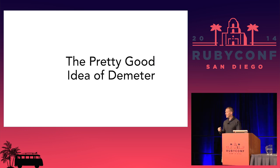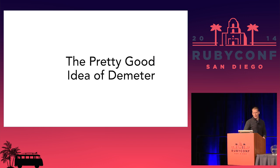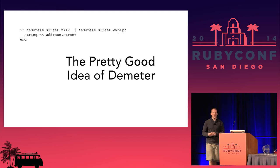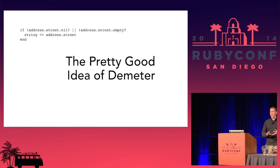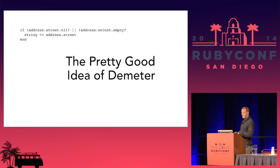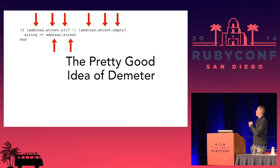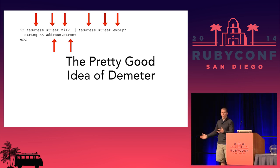Have you heard of the Law of Demeter? In this code, we're breaking the Law of Demeter, which says an object should only access itself, any parameters given to it, or any objects it created or directly holds. We're going through address to get to the street, checking its value — we have to know the full object graph of relationships to get this to work. There's a lot of knowledge about the system wrapped up here.